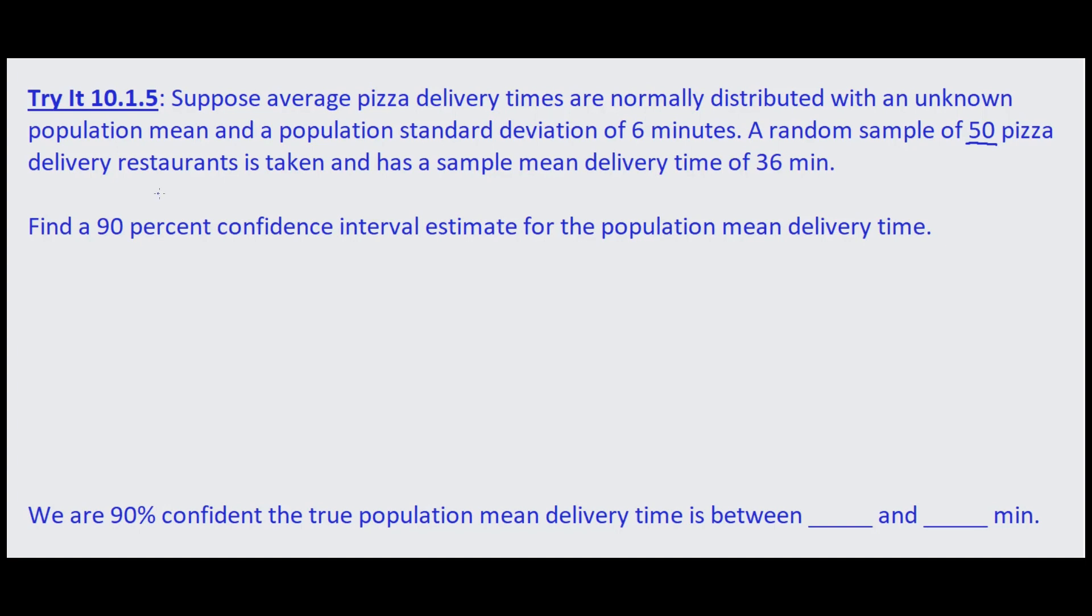So we write down our given information as usual. We know the population standard deviation is 6 minutes and in this case the sample size is 50 pizza delivery restaurants. We know that the sample mean is 36 minutes.